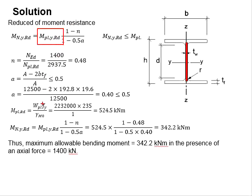The Npl,Rd is the moment capacity without any reductions. Substitute the relevant values into the equations. You obtain the reduced moment as 342.2 kNm.